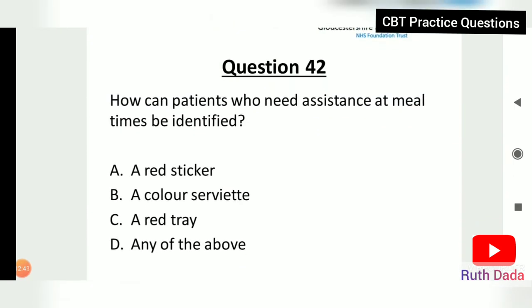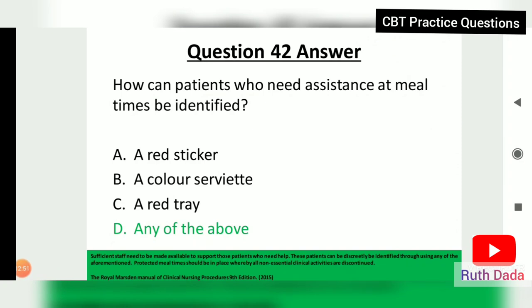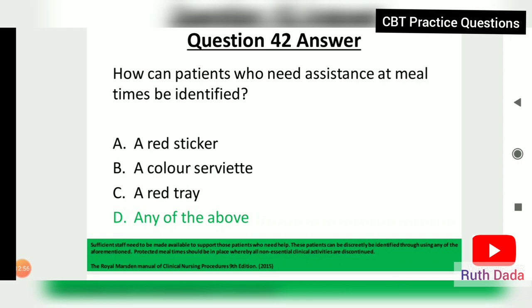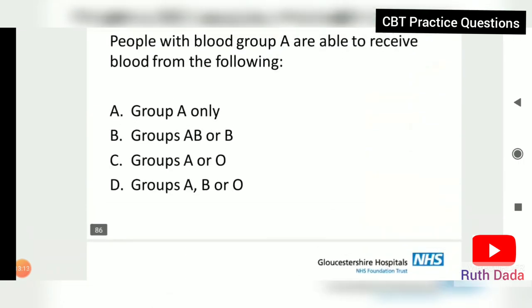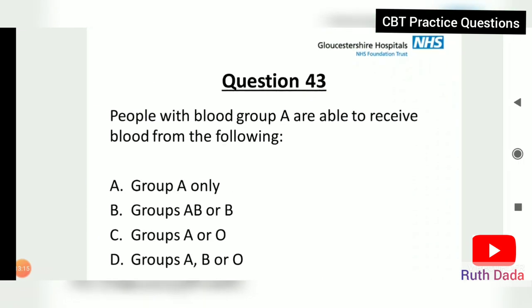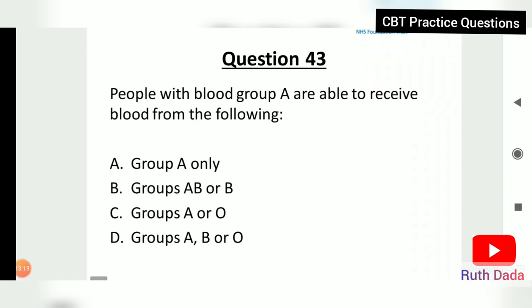Question 42: How can patients who need assistance at meal times be identified? The answer is any of the above: a red tray, a red sticker, or a color service. Sufficient staff need to be available to support these patients. Protected mealtimes should be observed, whereby all non-essential clinical activities are discontinued.